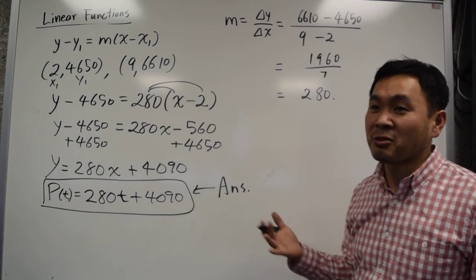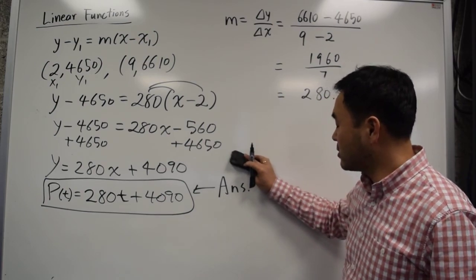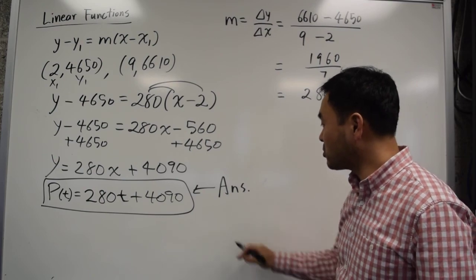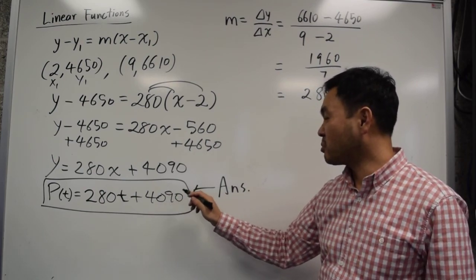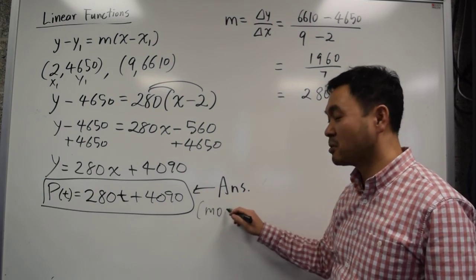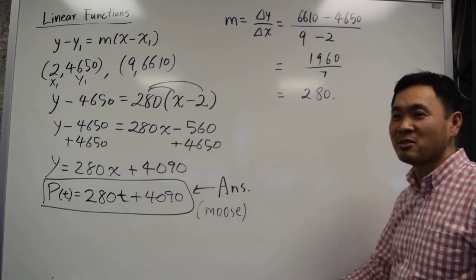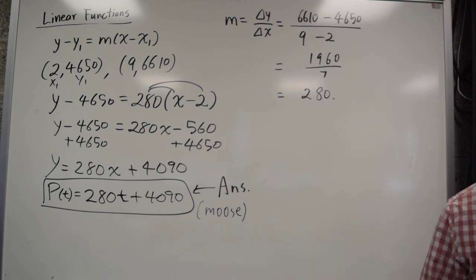Now, in word problems, you also have to think about units. So, I think if you were to include units, then it should be 280t plus 4090 moose. What's the plural of moose? Mice? No, I'm kidding. I don't know. Alright, let's just stop here.